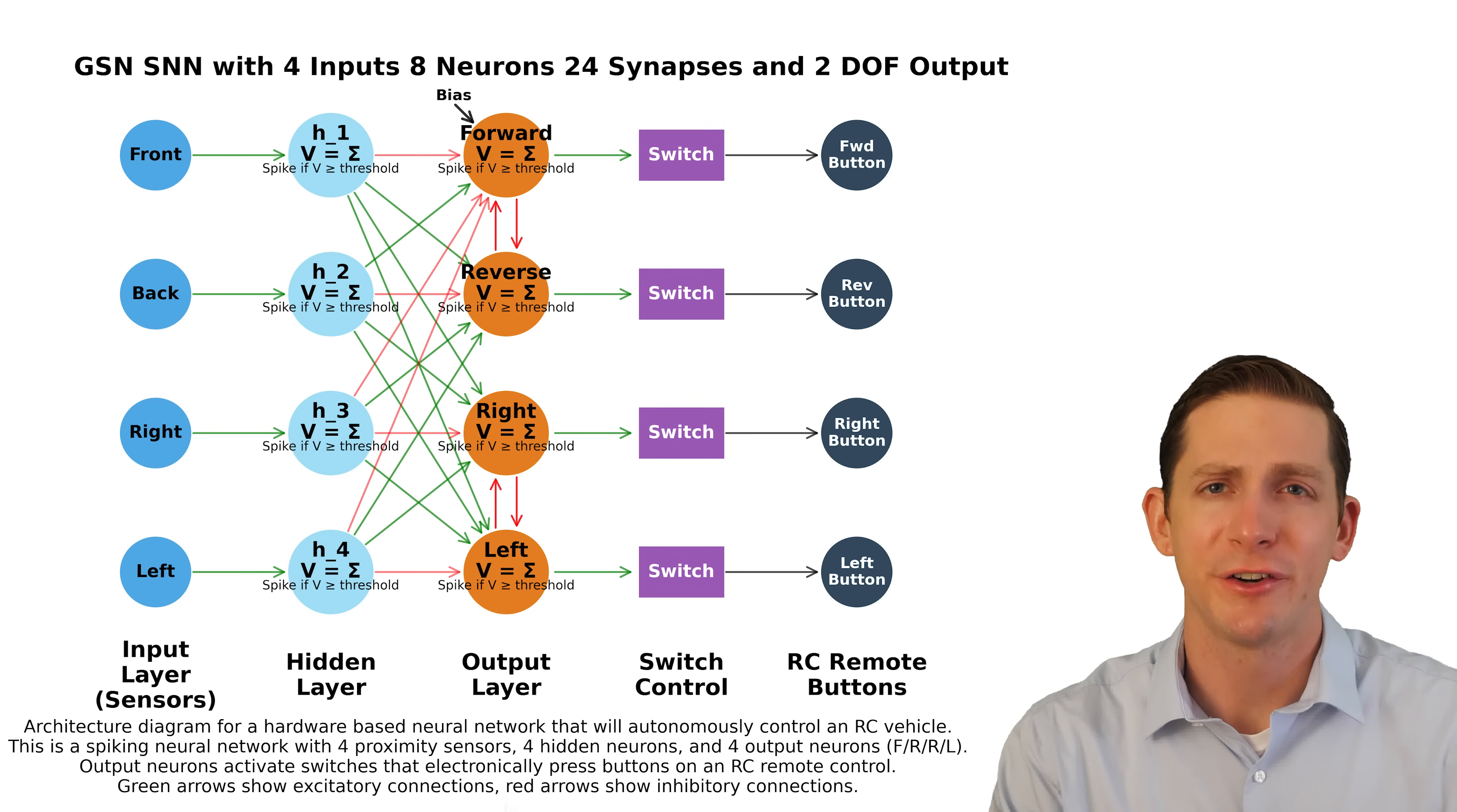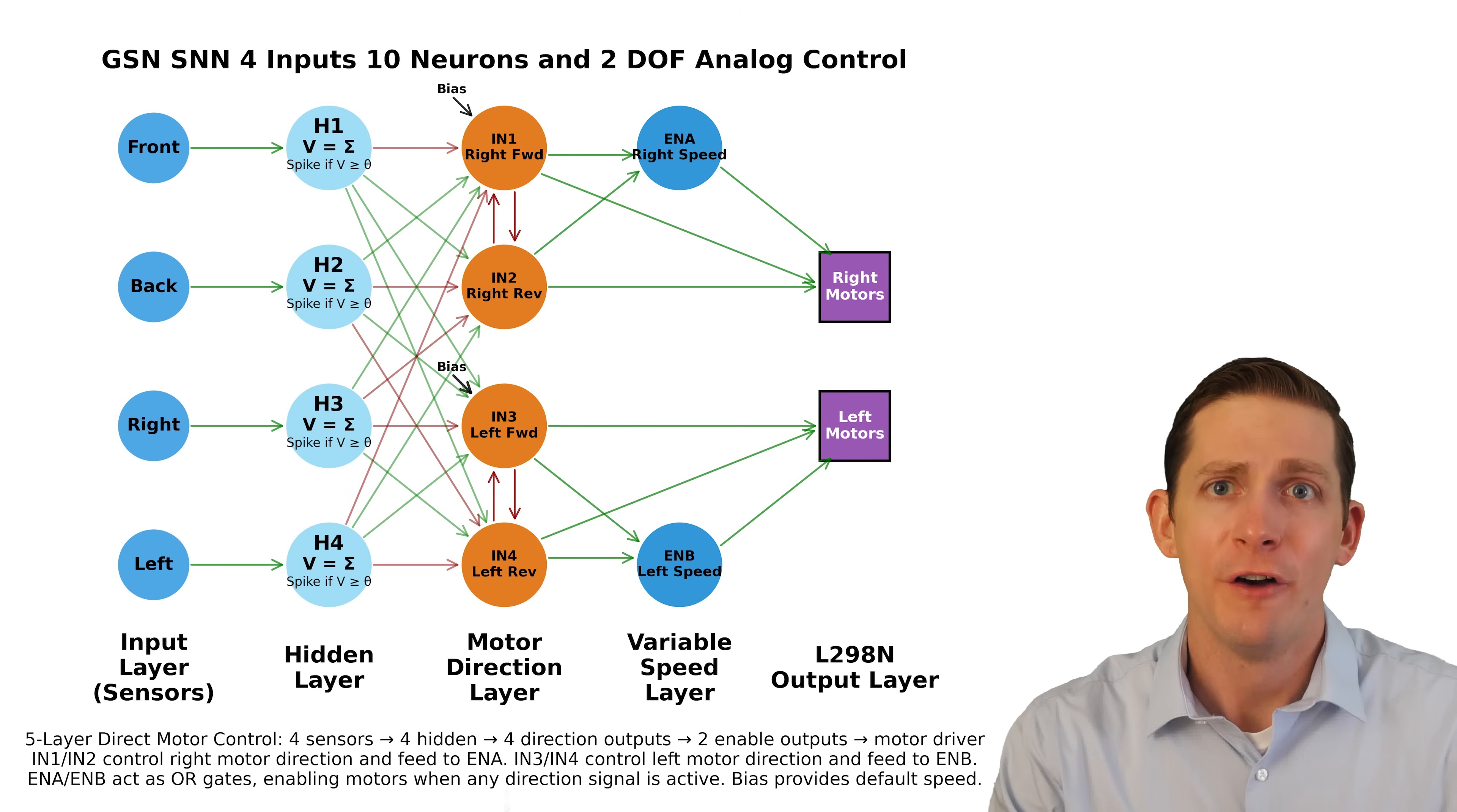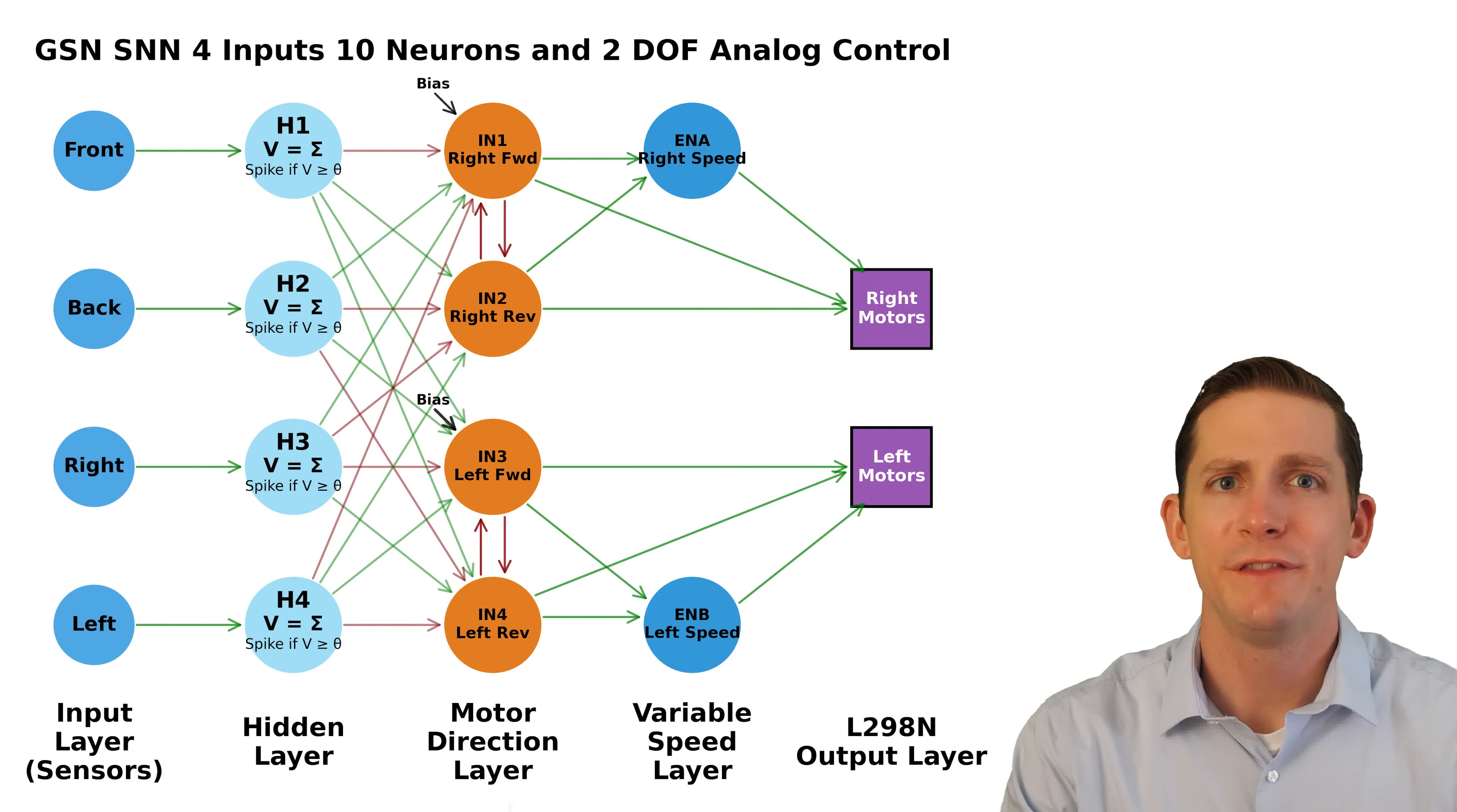Here is the architecture diagram we used for the RC truck. And here is the new neural network architecture diagram for the robot vehicle. We have the input layer, which are inputs from the IR proximity sensors. These are front, back, right and left.